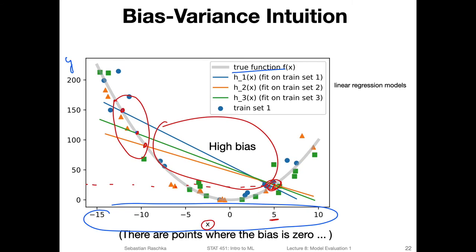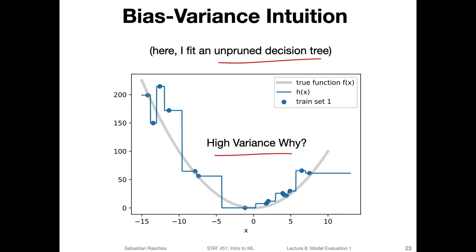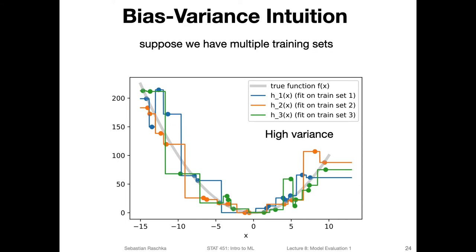Jumping back one slide: there would be a region where model predictions are very robust to the different training sets — very consistent, which is a low-variance case. With a more complex model, like an unpruned decision tree for regression, it would fit the data very closely. If the training set changes just a little bit, the model looks very different. Here I have three unpruned decision trees, and you can see all three models are very different — this is a high-variance case.